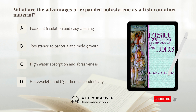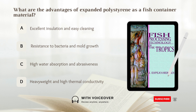What are the advantages of expanded polyethylene as a fish container material? Options: A. Excellent insulation and easy cleaning. B. Resistance to bacteria and mold growth.